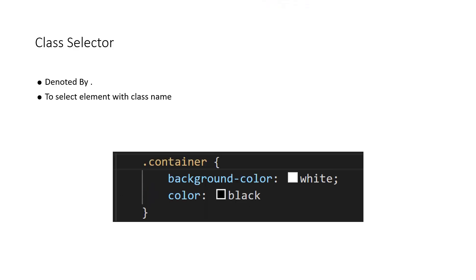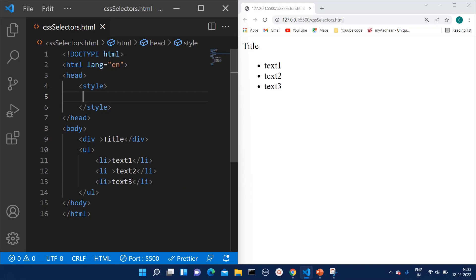The class selector is denoted by dot. Whenever we want to select any element which has a particular class name, we use the class selector. As a web developer I can say this is the most widely used selector within CSS selectors, because of the variety of features it provides. We will be covering those in this example. So here we will check the class selector — it is denoted by dot, and I will set this division's class as 'container'.